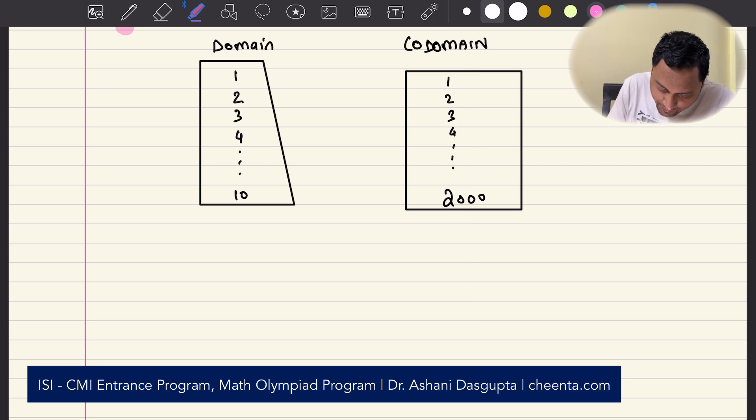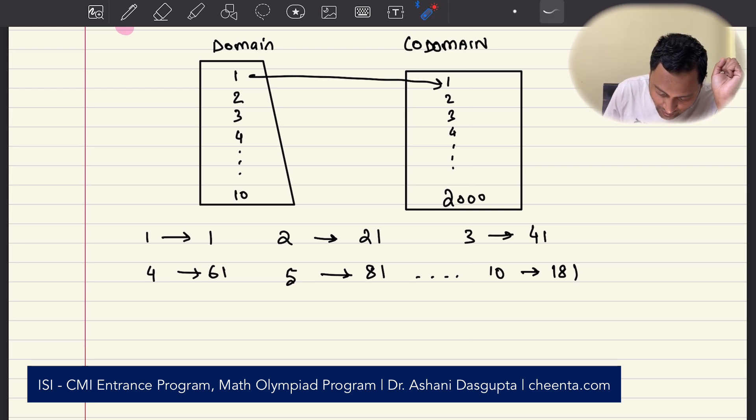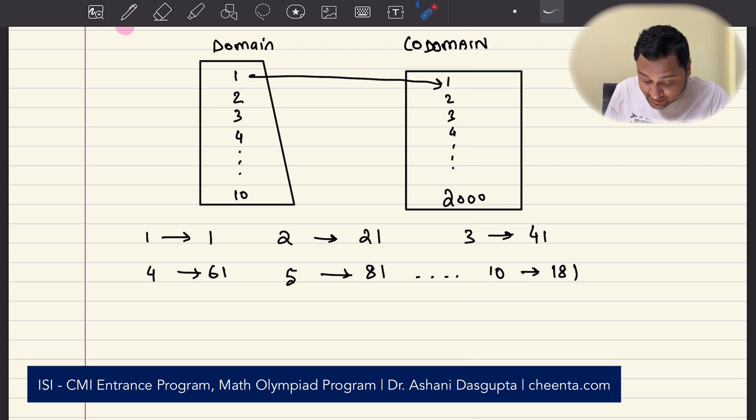One such case could be 1 maps to 1, so 1 maps to 1, 2 maps to 21, the number 2 maps to 21, 3 maps to 41, 4 maps to 61 and so on. 5 maps to 81, so like this we can go on up to 10. So, 10 would map to 181. Notice that the consecutive output values are 20 or more apart. That makes this particular function, let's call it f1. This is one such function which has this property.